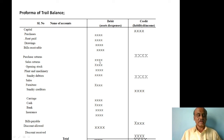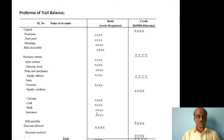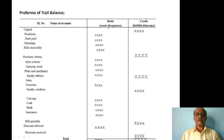Purchase returns on the credit side; sales returns on the debit side; opening stock on the debit side; plant and machinery also debit side; sundry debtors on the debit side; sales on the credit side; purchases and furniture on the debit side; sundry creditors on the credit side; carriage — debit side; cash — debit side; bank — debit side; insurance — debit side; bills payable — credit side; discount allowed — debit side; discount received — credit side.